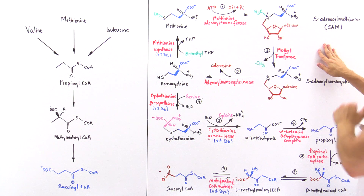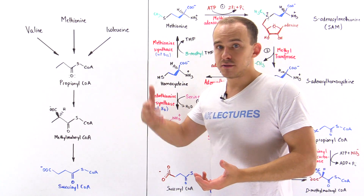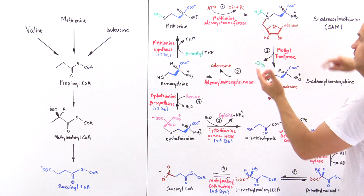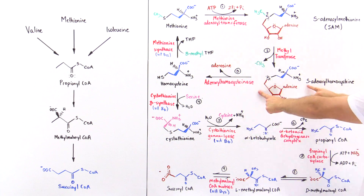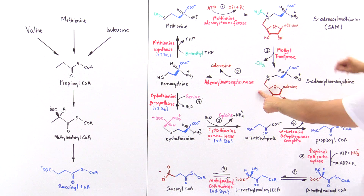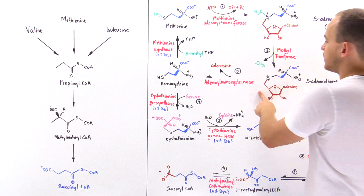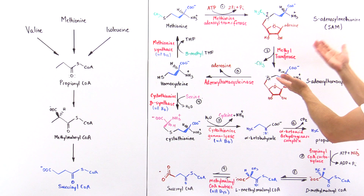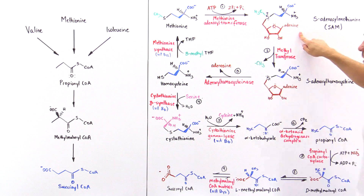That is exactly what happens in step two. We take the SAM and use it to methylate a target molecule. That removes the methyl group and forms the molecule we call S-adenosyl homocysteine. Once we remove this methyl group, there is no longer a positive charge on the sulfur, so it is slightly more stable than before. The enzyme that catalyzes this process is methyltransferase, which catalyzes the transfer of the methyl group from SAM onto a target molecule.